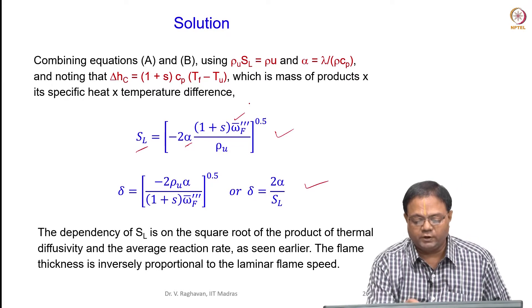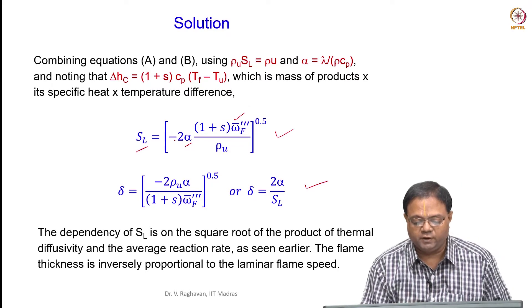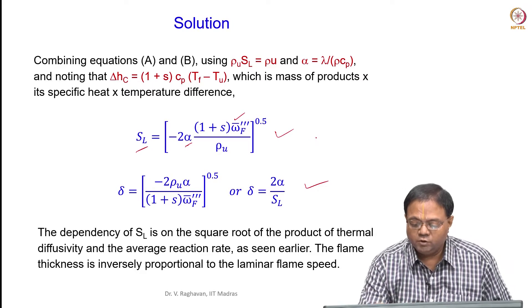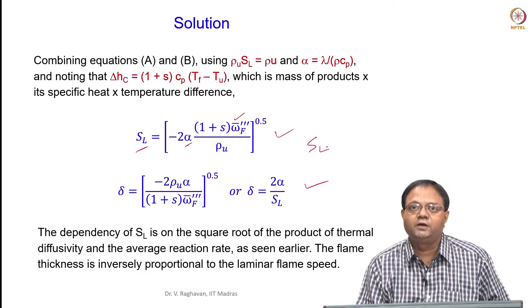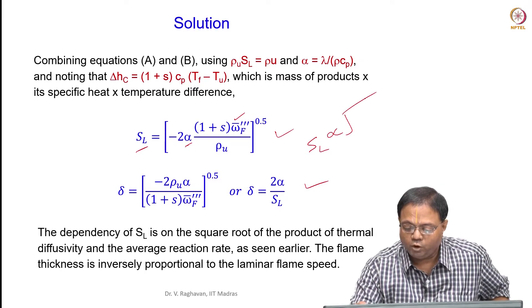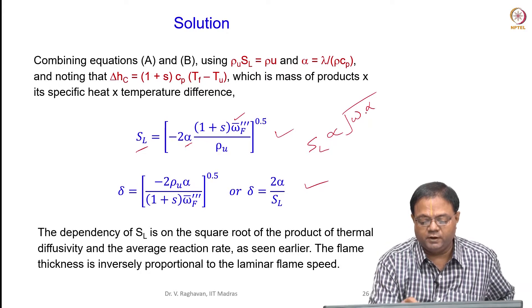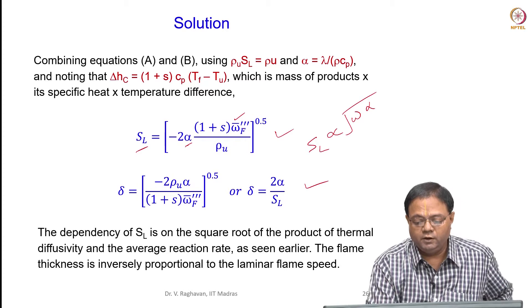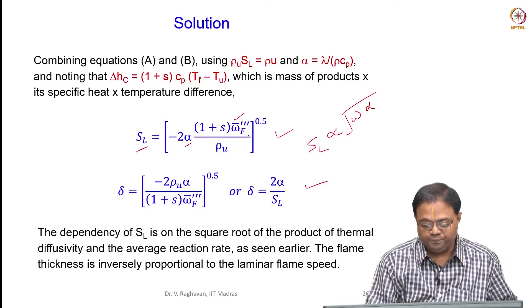This is actually the fuel consumption rate, so the negative term appears here. From the thermal theory, SL was proportional to the square root of reaction rate and the thermal diffusivity. The same thing appears here: SL is proportional to the square root of alpha times omega triple dash F, that is the reaction rate.